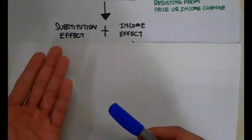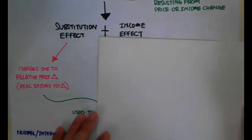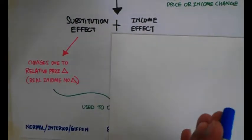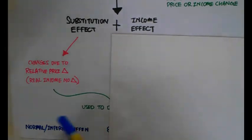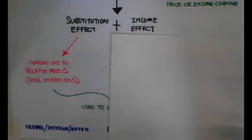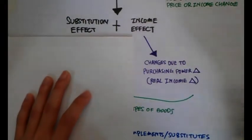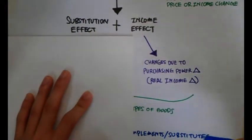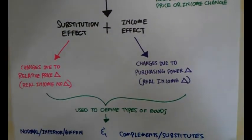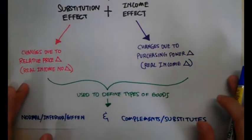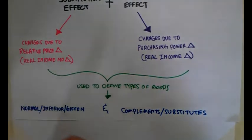Let's talk about the substitution effect first because that is what consumers go through first. The substitution effect is changes due to a relative price change where the consumer's real income has not changed yet. The income effect would be changes due to the purchasing power of the consumer due to a change in real income. By breaking down the total effect into the substitution effect and the income effect, we are able to define the type of goods, X and Y.